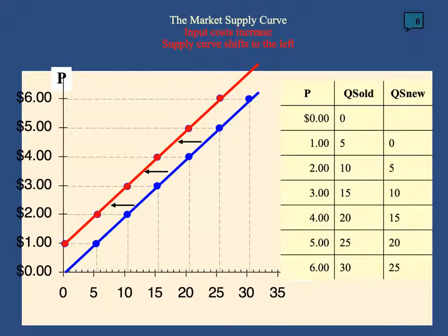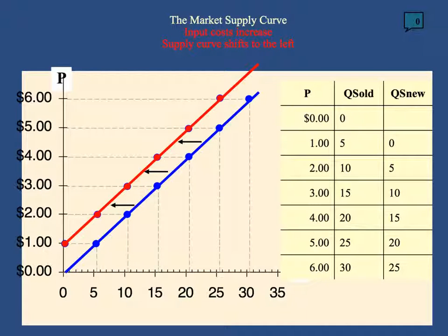Whenever there is a factor that changes that is not price, there's going to be a shift in supply — just like it happens with the demand curve. When you shift the curve, you're actually changing the supply schedule, meaning firms are willing to supply less or more units at every given price level. In this case, something happened that firms are less willing to supply — they supply less output at every given price level, shifting the supply curve left. This is an important contrast: when prices change, you get a movement along the supply curve because you just go from one point to another point.